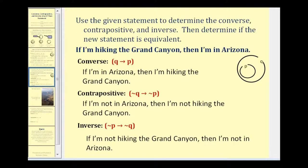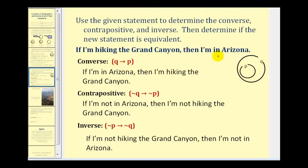Now let's take a look at a second example. Here we want to use the given statement to determine the converse, contrapositive, and inverse, determine if the new statement is equivalent, and also determine if it would be true or false. The given statement is: if I'm hiking the Grand Canyon, then I'm in Arizona. The Grand Canyon is one of the largest tourist attractions located in Arizona and also a national landmark. So hiking the Grand Canyon is modeled by circle P, and being in Arizona is modeled by circle Q. Notice how it's possible to be in Arizona but not be hiking the Grand Canyon — meaning outside P but inside Q.